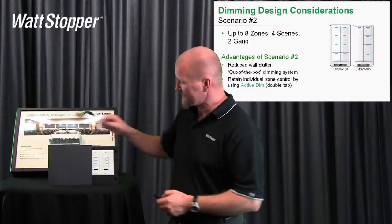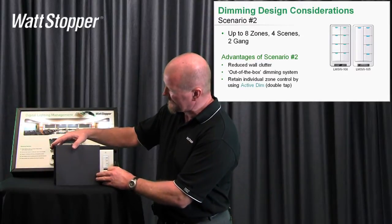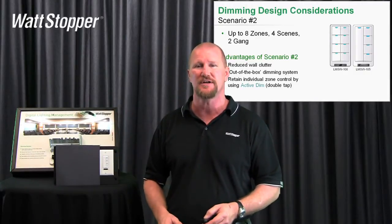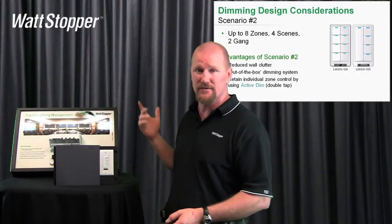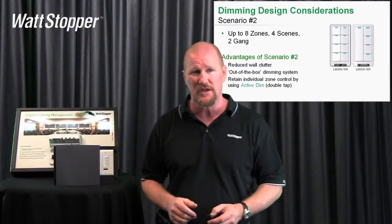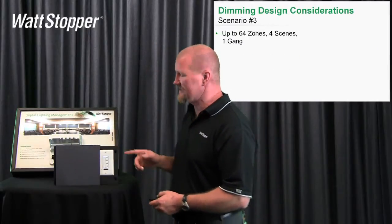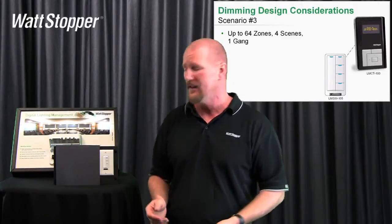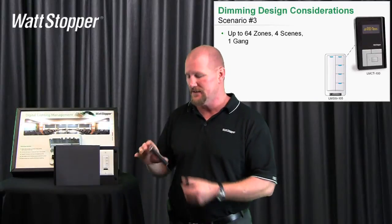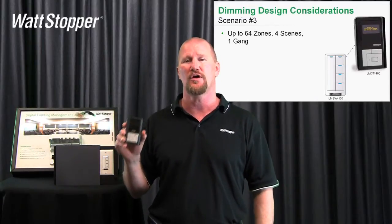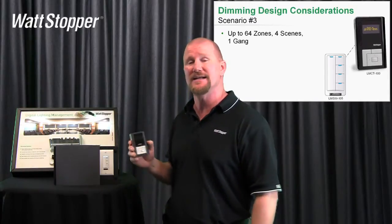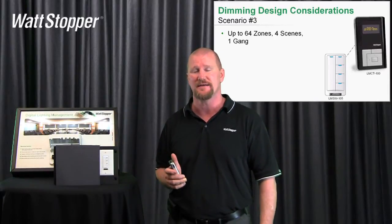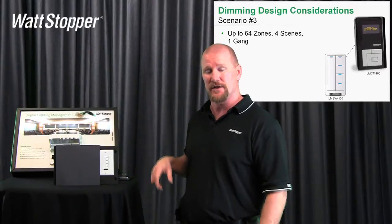We're going to take this a step further. Now I have only a scene switch — no dimmers hidden in closets, no dimmers behind a credenza, just a scene switch. This is the most powerful solution with digital lighting management. Every DLM room can have up to 64 loads, and with this scene switch and the LM CT100, I have the ability to control all 64 loads, set their light levels, and set and recall scenes — up to 64 zones, four scenes, in one gang.